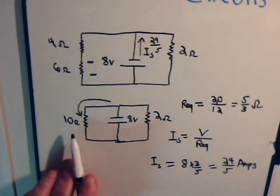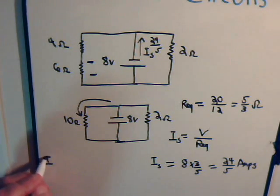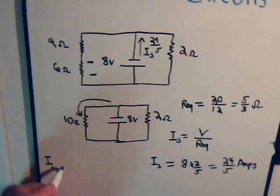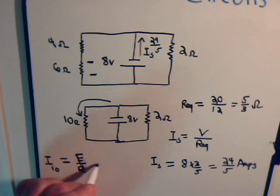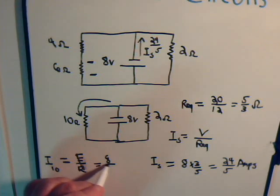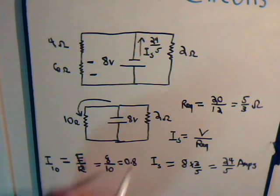So if the voltage drop across the 10-ohm resistor is 8 volts, once the current that goes through, we can say, well, I, the 10-ohm resistor would be 8. So that would be 8 over 10, so that is 8 tenths amps.